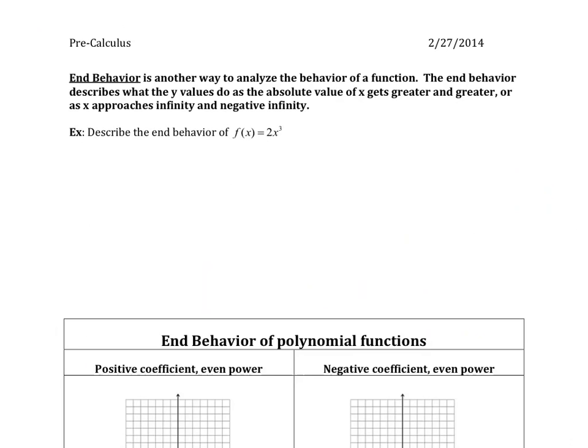Okay, the last thing we want to do is talk about end behavior. End behavior is another way to analyze the behavior of a function. So, it describes what the y values do as the absolute value of x gets greater and greater or what that's saying is as x approaches infinity, what is y doing? So, one way we can figure this out is by making, again, a table of values. So, we're looking at as we approach infinity and negative infinity in x, what's going to happen to y? So, we're going to start in the middle with 0 and then we're just going to kind of increase values. So, as I go to negative infinity, these numbers are just going to get bigger and bigger and bigger. Obviously, I'm not going to plug in really large numbers, but I'm just going to see what's happening in these small intervals and then as I go to positive infinity, so bigger and bigger numbers in the positive direction. I'm going to plug these into the function and see what I get out.